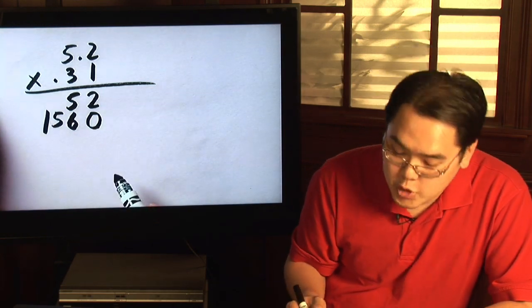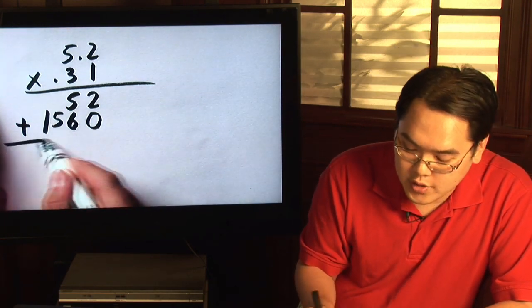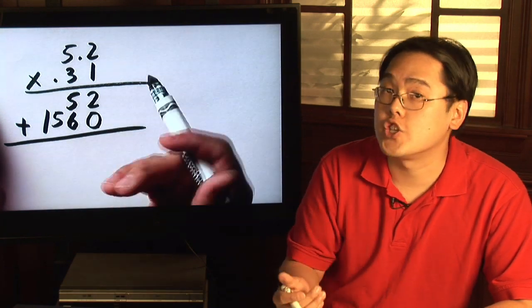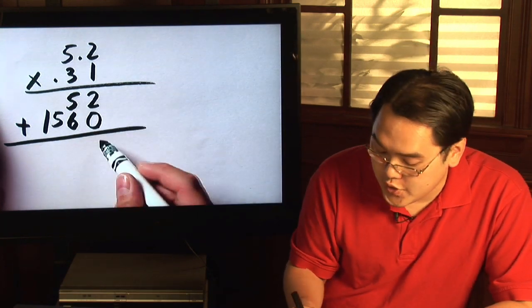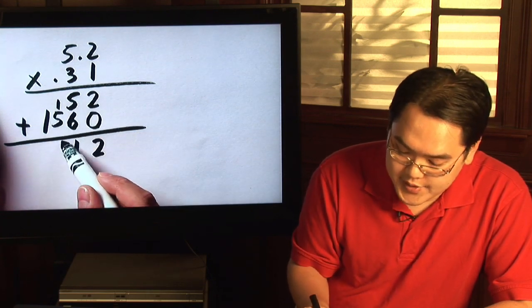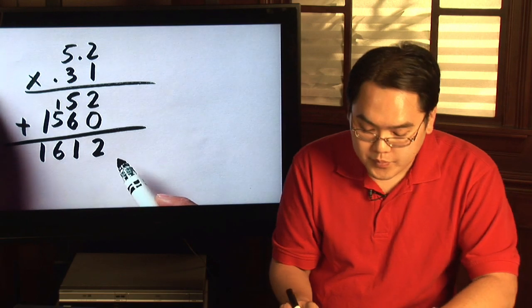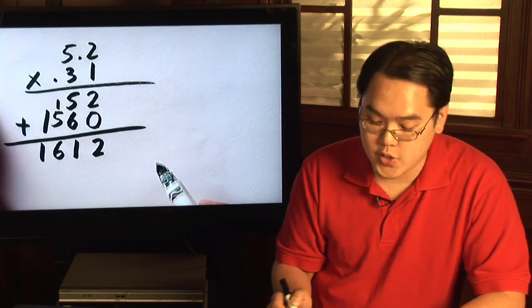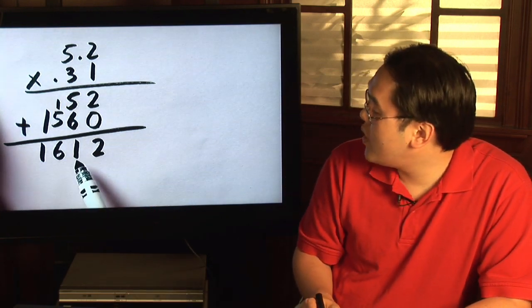As you know with standard multiplication, you just add all the lines together. Add normally: 2 and 0 is 2, 5 and 6 is 11, carry the 1. 1 and 5 is 6, and then the 1 is there. So you have a total of 1612.